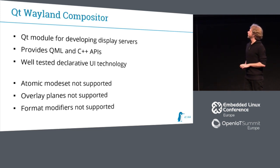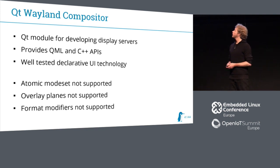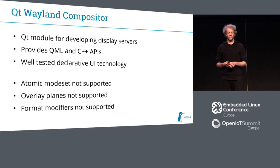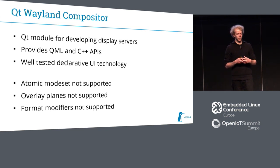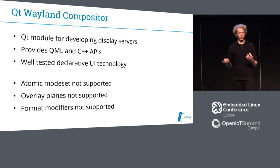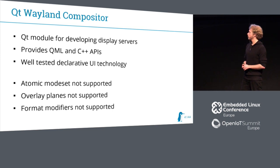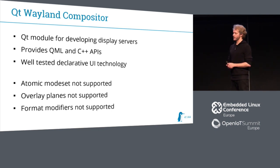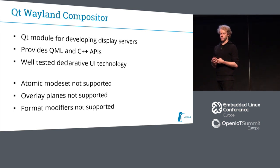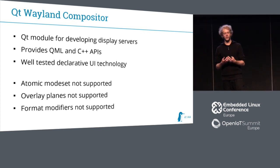Then there is the Qt Wayland compositor — a Qt module for developing display servers. It provides a QML interface, which makes it really simple to write a compositor. Someone who already writes applications in QML will find writing a compositor with QML very easy, using well-tested declarative technology. However, the Qt Wayland compositor does not use atomic mode set, and therefore cannot use overlay planes or format modifiers. It is also not that performant for embedded use cases.